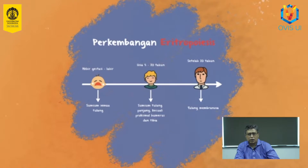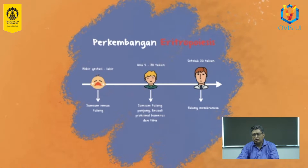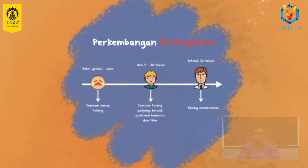Sumsum tulang kuning dapat ditemukan pada bagian diafisis dari tulang panjang. Di saat seseorang memasuki usia lanjut, hampir seluruh sumsum tulang telah berubah menjadi sumsum tulang kuning, dan proses ini irreversibel, sehingga akan susah bagi tubuh untuk mempertahankan proses fisiologis menggantikan sel darah bagi orang-orang usia lanjut.